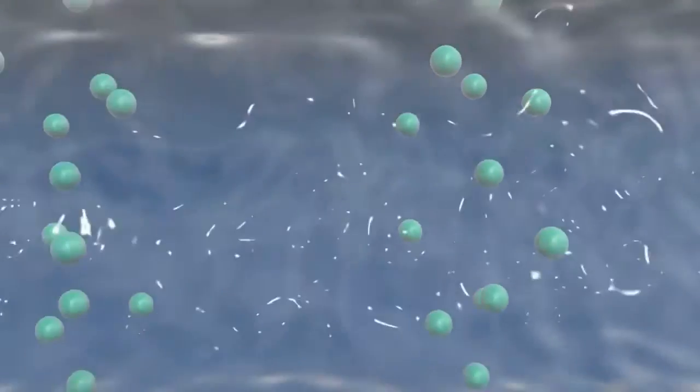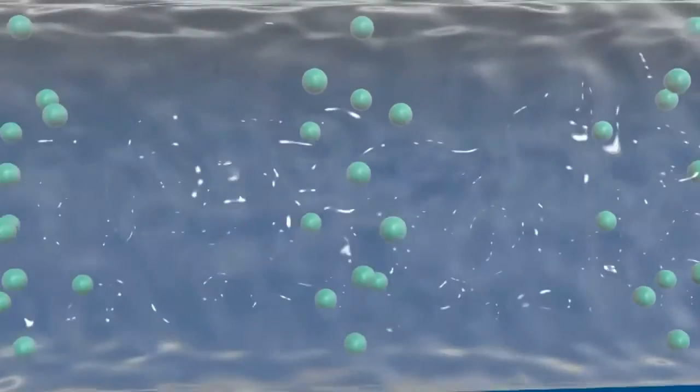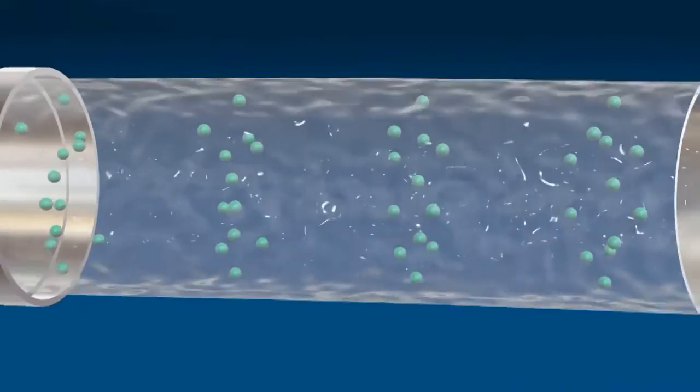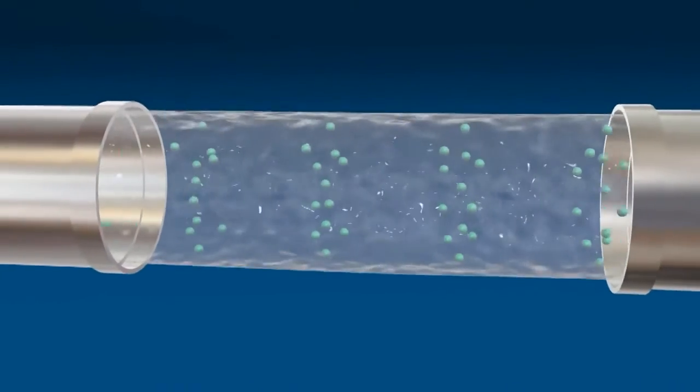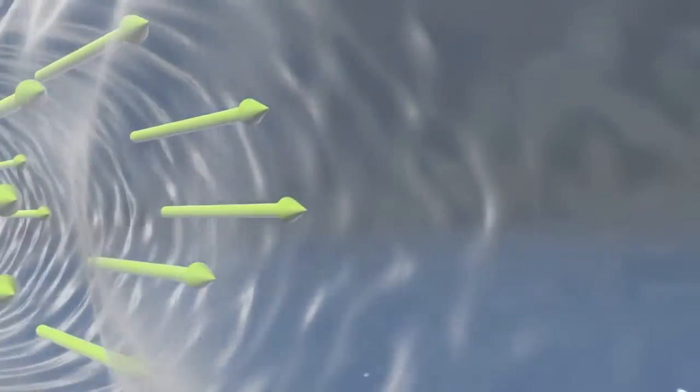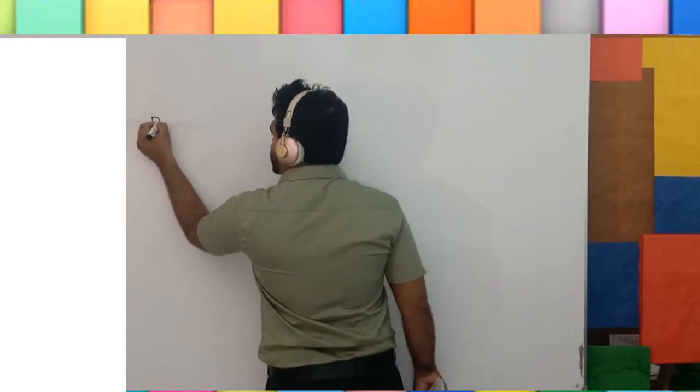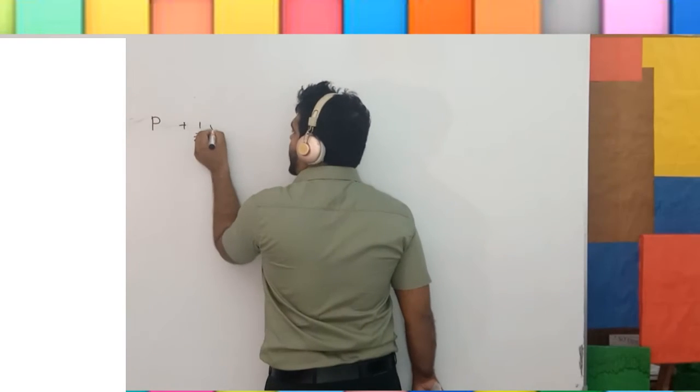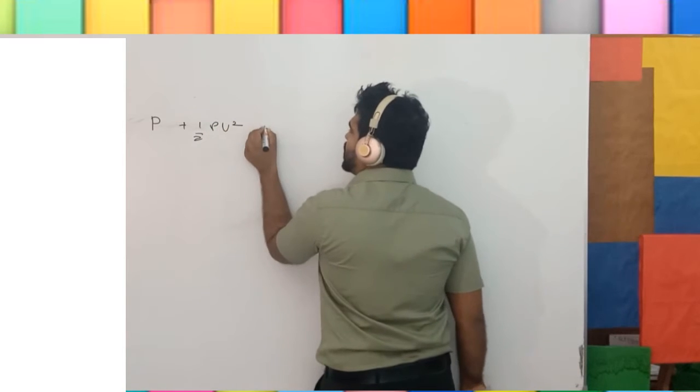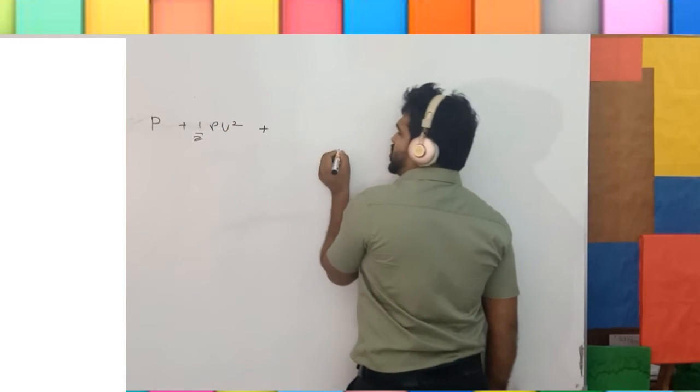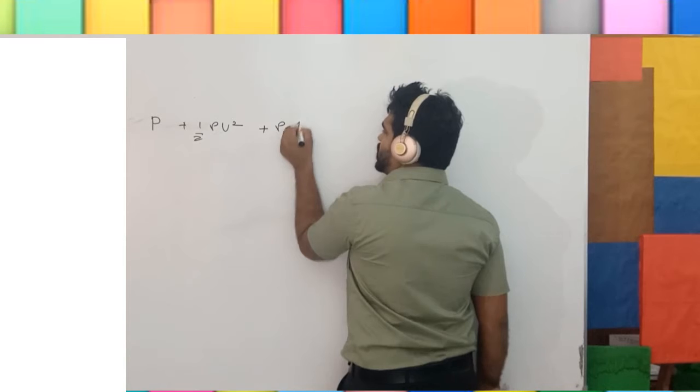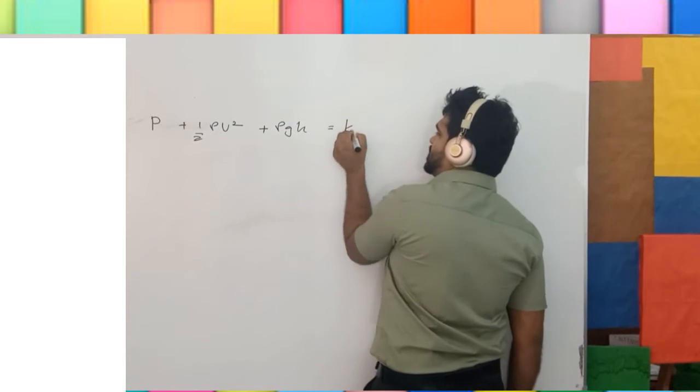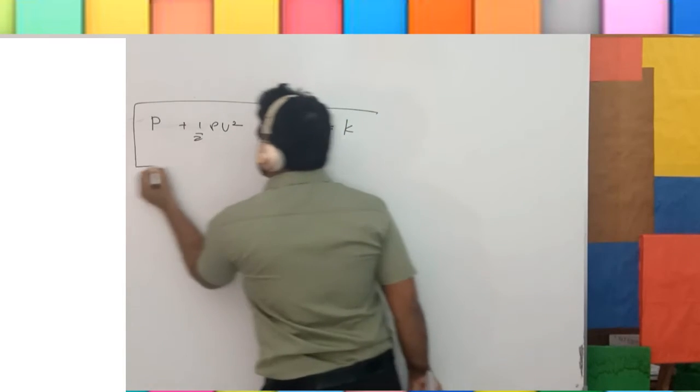The sum of pressure, kinetic energy per unit volume, and potential energy per unit volume of a non-viscous, streamlined, static fluid flow is a constant. Pressure, kinetic energy per unit volume, potential energy per unit volume is a constant. This is Bernoulli's equation.